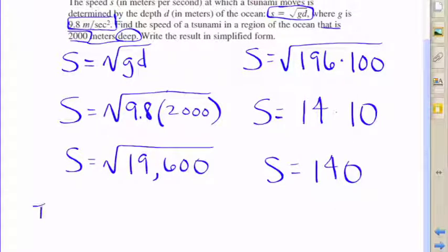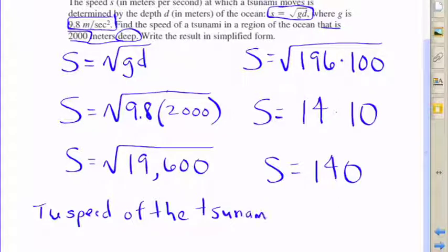So we end up with s equals 140 because we can evaluate the square root of 196 and 100 as 14 times 10. And so there we have it. The speed of the tsunami is going to be 140 meters per second.